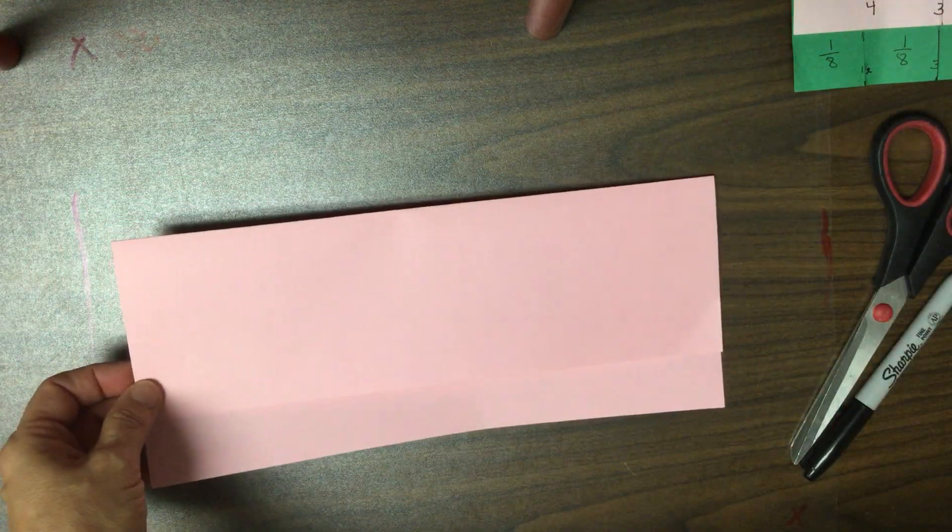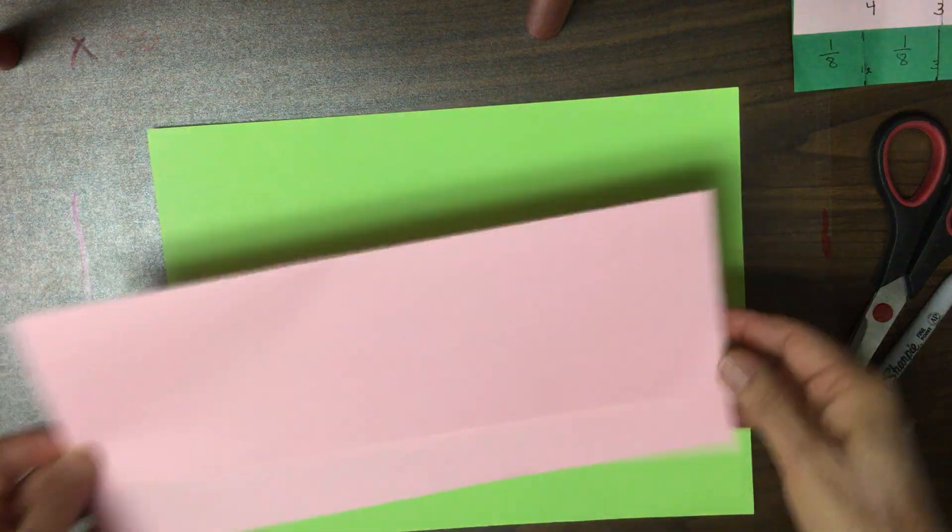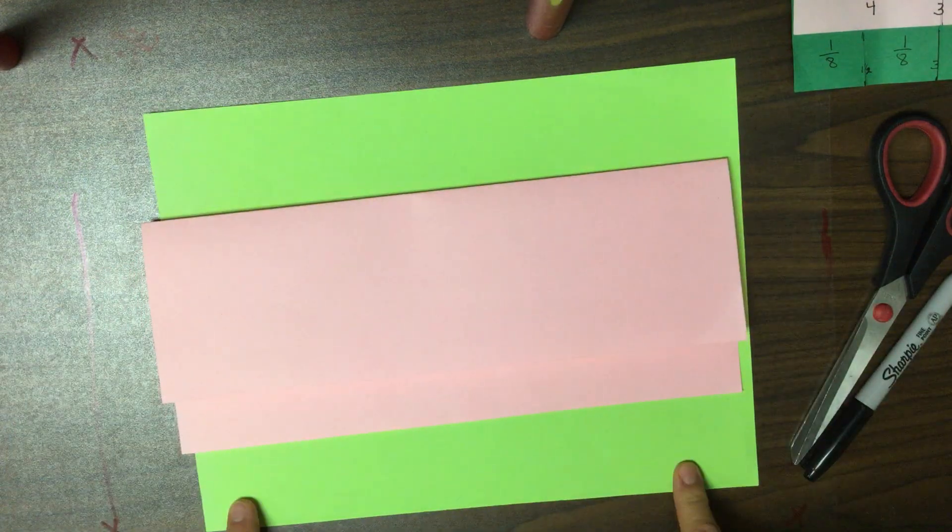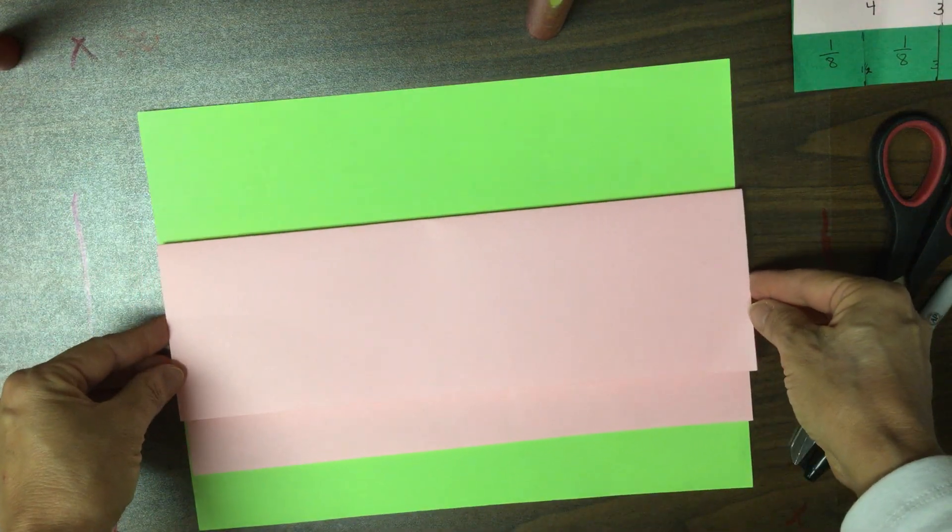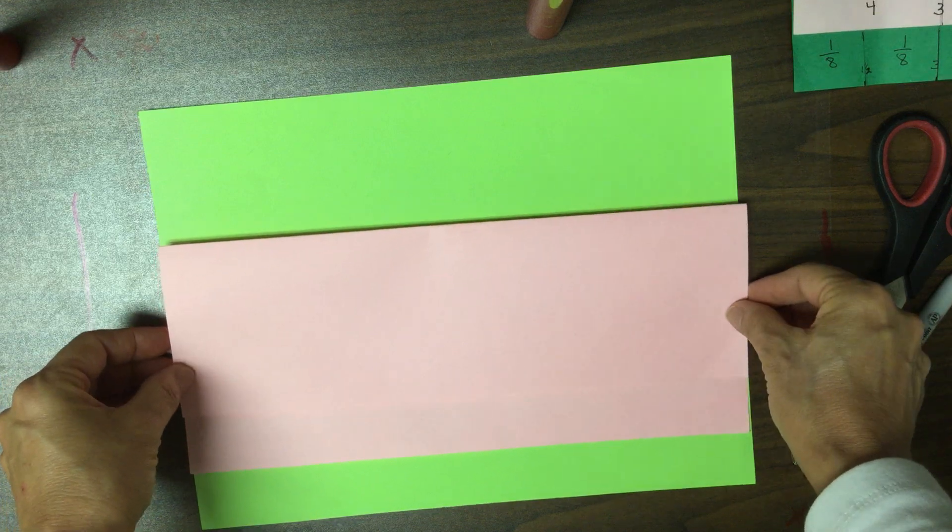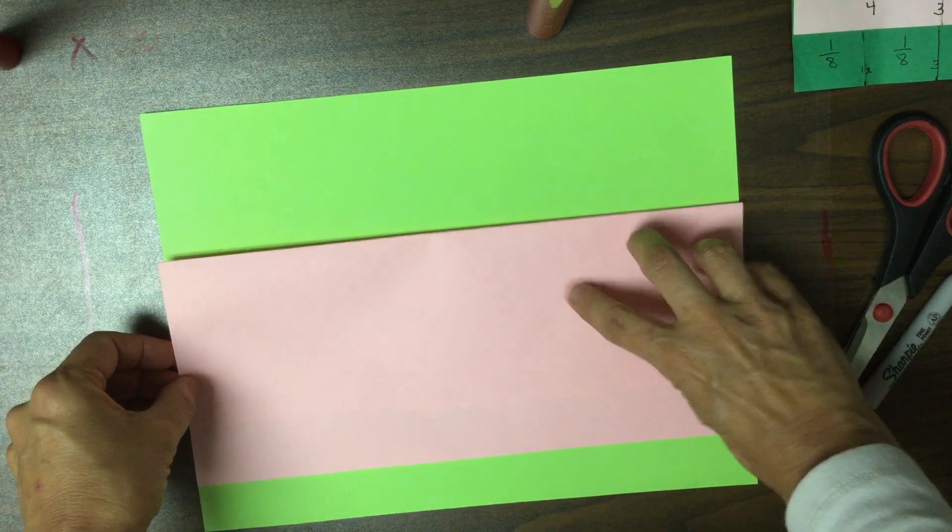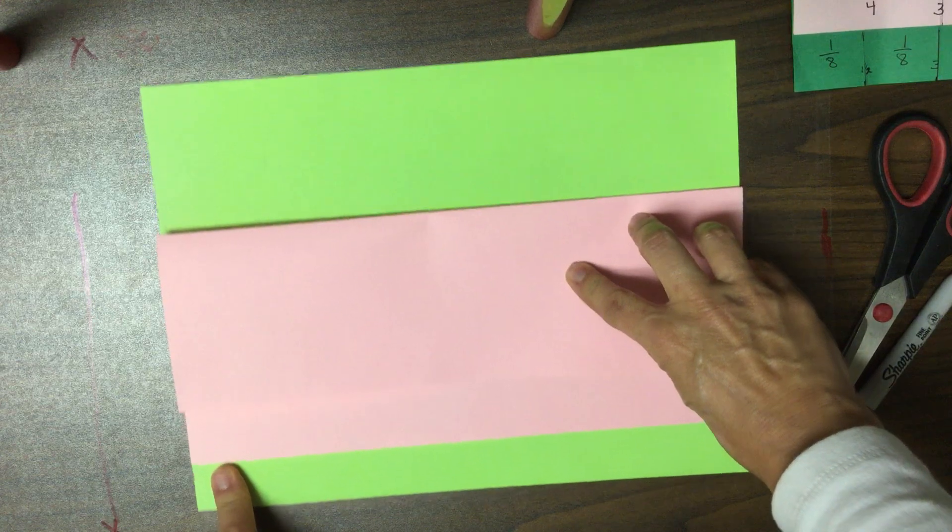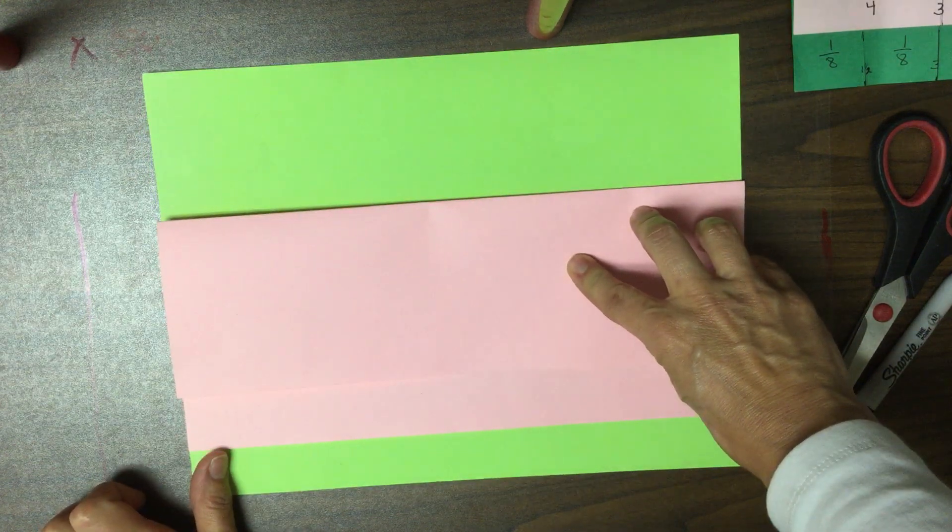Then we're going to put the pink paper underneath and you also want it to have about an inch on the bottom. I'm going to bring this down so that there's about an inch. It doesn't have to be exactly an inch. If I use my thumb that's about an inch.